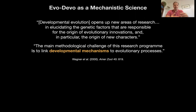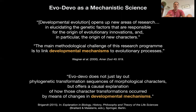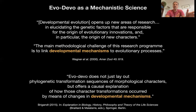The main methodological challenge of this research program is to link developmental mechanisms to evolutionary processes. The mechanistic here means mechanistic explanations of development, and as we saw in the last lecture, it's not a machine-like interpretation of development, but rather a causal explanation of the phenomena of development. As philosopher Ingo Burgand puts it, evo-devo offers a causal explanation of how character transformations occurred by means of changes in developmental mechanisms — not only recording evolutionary transitions, but explaining what caused them.